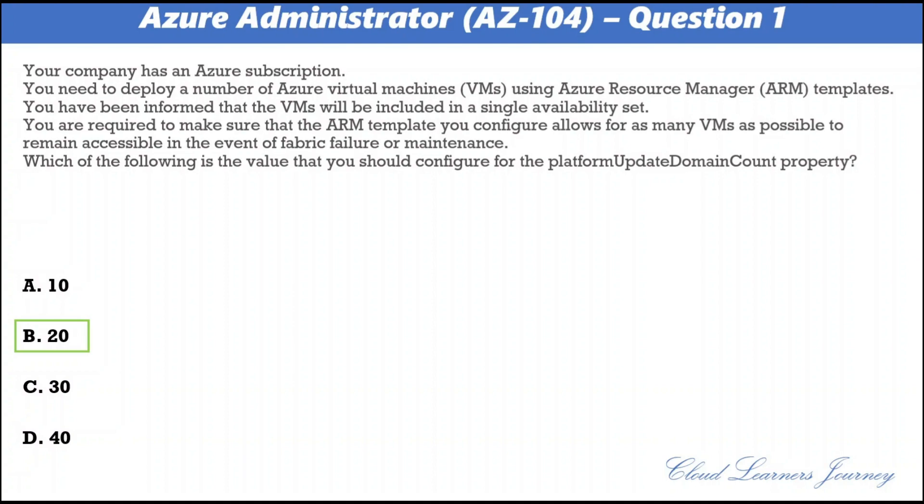Each virtual machine in an availability set is assigned an update domain and a fault domain by the underlying Azure platform. Each availability set can be configured with up to three fault domains and 20 update domains. In part two the question was about the fault domain; here the question is about the update domain.